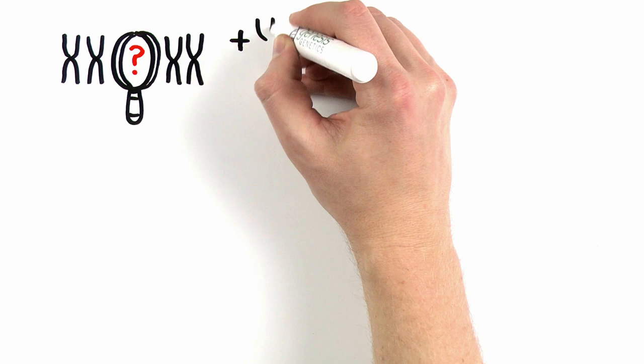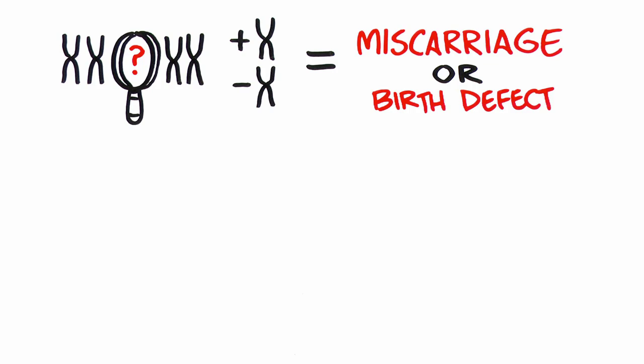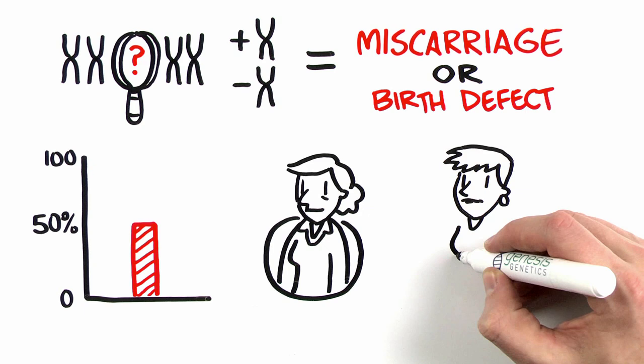Sometimes a chromosome is missed or includes too many or too few copies, causing a miscarriage or leading to birth defects. This happens 40 to 50 percent of the time, in fact in older women as well as younger couples.